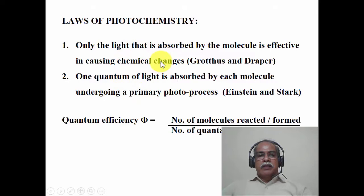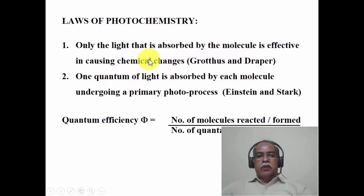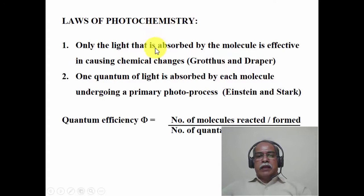There are two laws of photochemistry, which are essentially common-sense laws. The first, proposed by Grotthuss and Draper, states that only light that is absorbed by a molecule is effective in causing chemical changes. This is fairly obvious — if the photon energy is not absorbed, there is no photochemical reaction. Importantly, one should choose the wavelength of light where the molecule absorbs. It is absolutely essential to first record the UV-visible spectrum of the molecule before attempting any photochemistry.